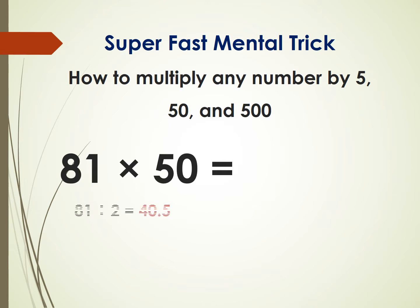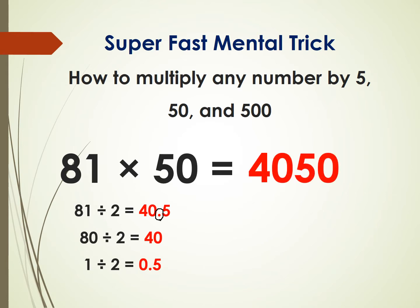Next example: 81 times 50. 81 is not divisible by 2, so if you divide it you get 40.5. Divide 80 by 2, you get 40, and then 1 divided by 2 is 0.5. To write the answer, just ignore the decimal point — you get 405 — then put a zero after it, so the answer is 4050.